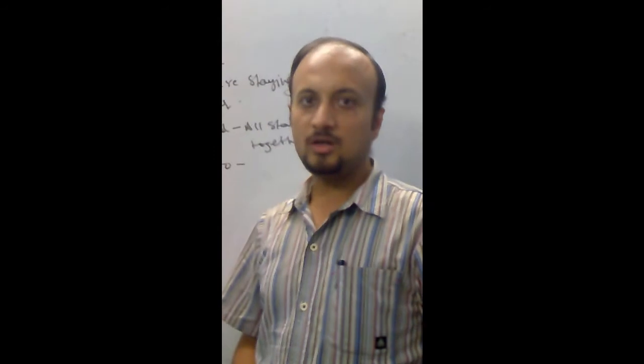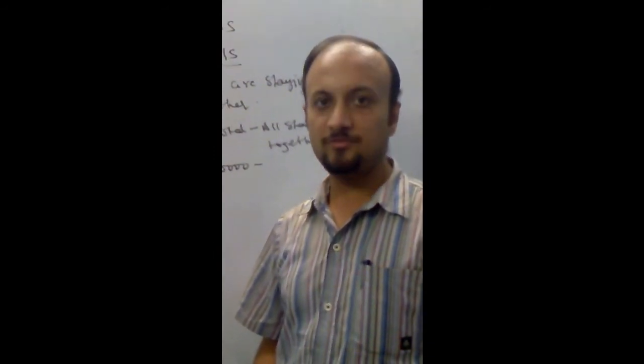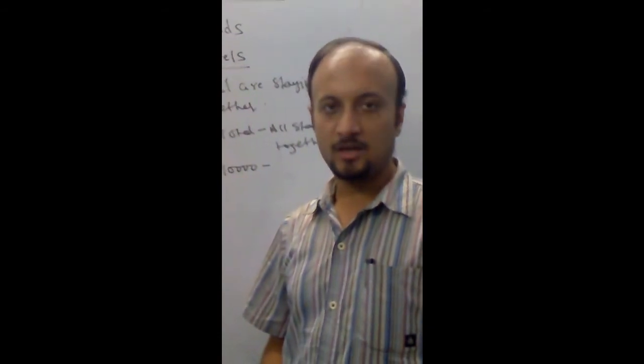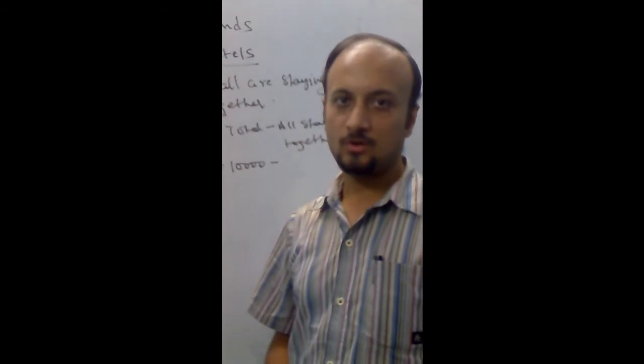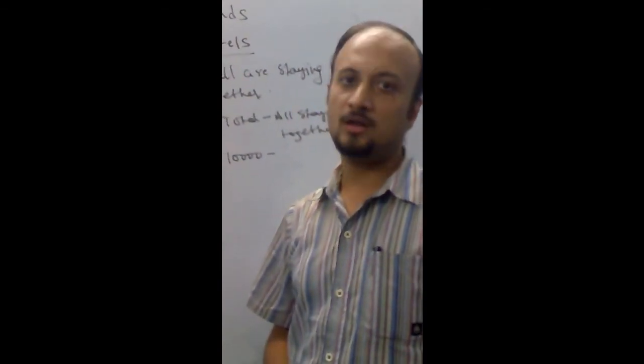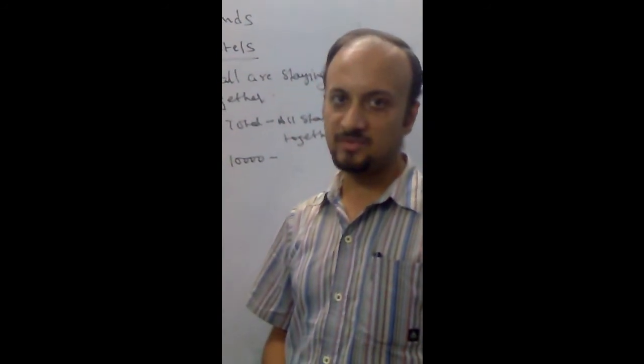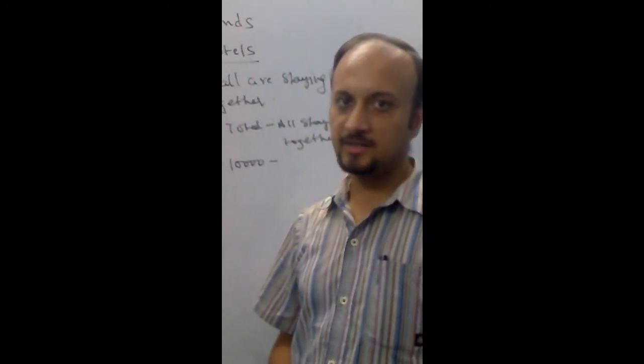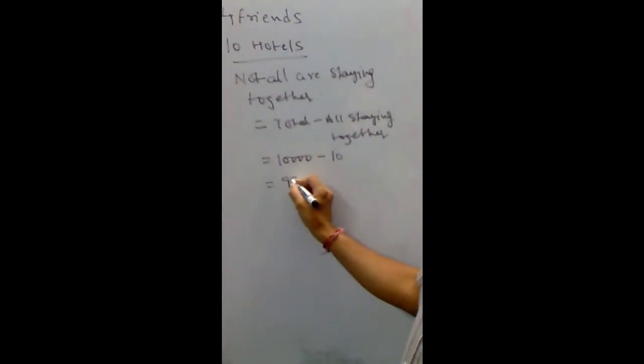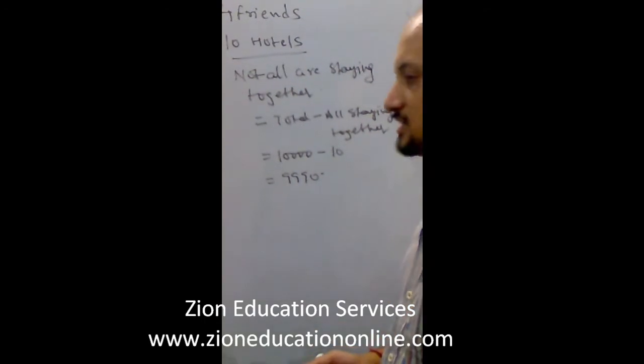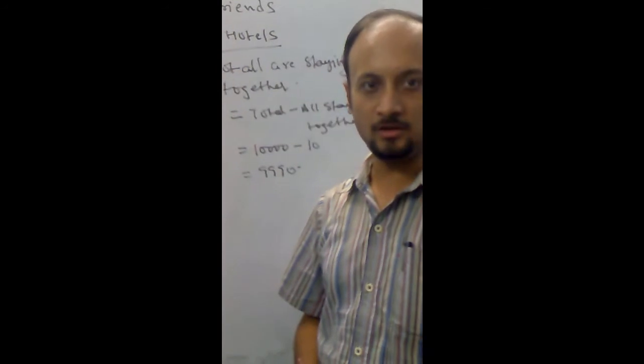In order to ensure the total number of ways in which they can stay together, let us do what? Let us handcuff all four of those friends. Therefore, making them one entity. Now, this one entity or a group of friends can either go to hotel one or hotel two or hotel three and so on up to hotel number ten. So, all in all there are ten ways in which these friends can stay together. And that when subtracted from total number of ways they can stay, will leave us with the number of ways in which not all are staying together. I think this question should be clear to all.